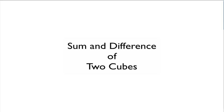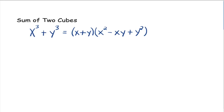Now we're going to factor the sum and difference of two cubes. Here's the first one, the sum of two cubes. Back previously, you learned how to multiply a binomial times a trinomial. If you take this binomial x plus y and this trinomial x squared minus xy plus y squared and multiply these things out, it would simplify down to x cubed plus y cubed.